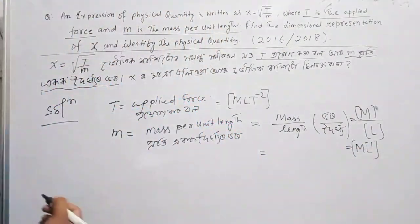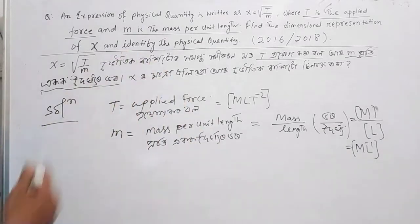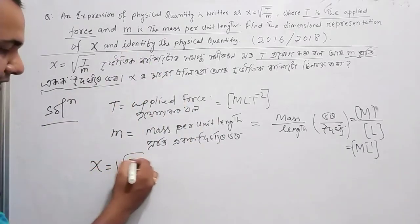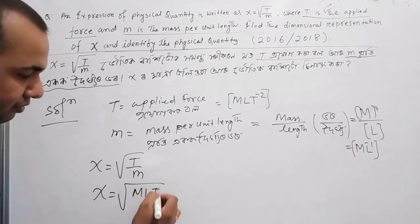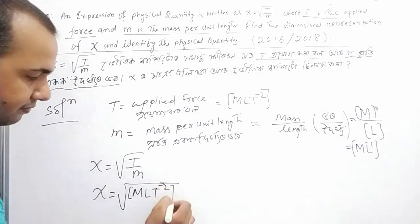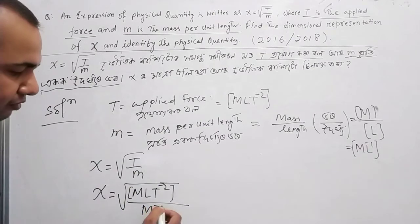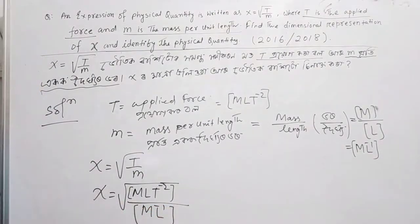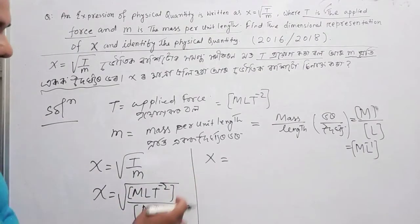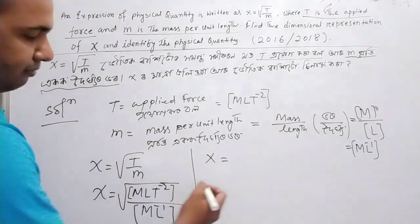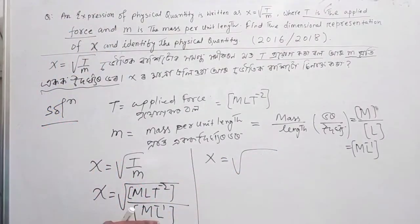So our equation is X = √(T/m). Substituting the dimensional values, X = √(MLT^-2 / ML^-1). M cancels out, giving X = √(LT^-2 × L).